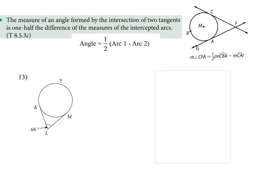The measure of an angle formed by the intersection of two tangents — two tangents intercepting on the outside — gives you the same formula: one half the difference in the measure of the arcs.